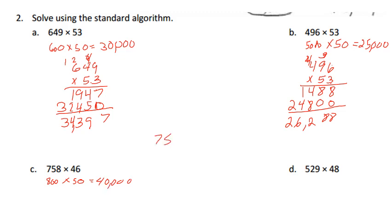Now let's go 758 times 46. 8 times 6 is 48, carry 4. 6 and 5 is 30 and 4 is 34, carry our 3. 6 times 7 is 42 and 3 is 45.